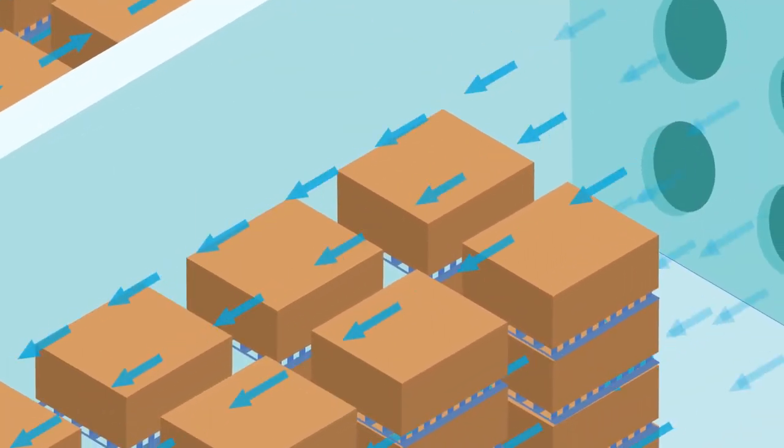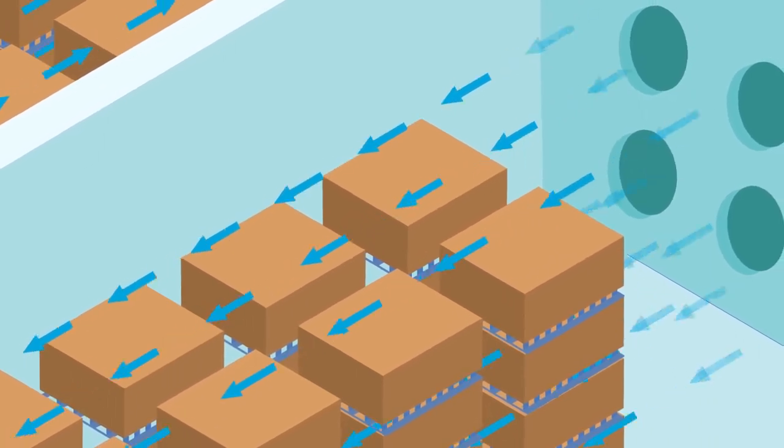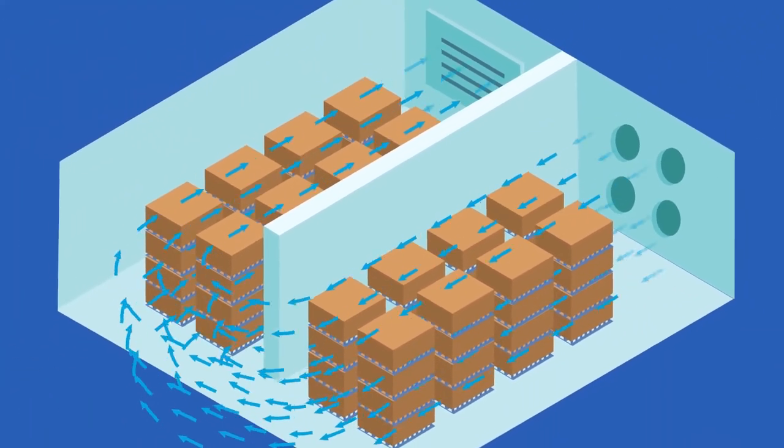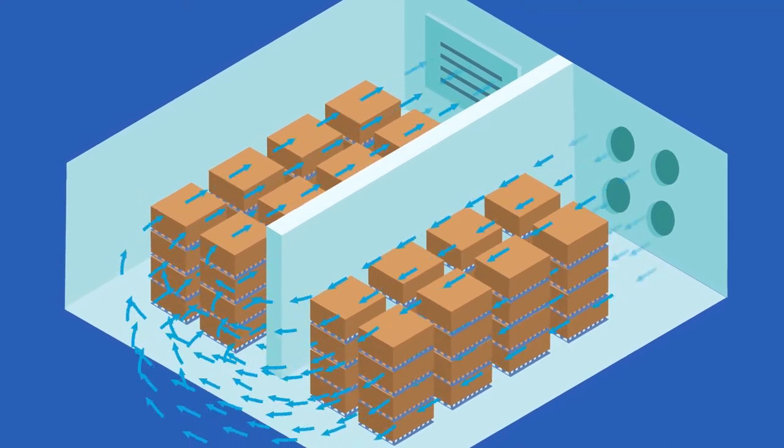Low air resistance further ensures that the airstream is not blocked after the first few pallets but also reaches the pallets at the far end of the blast freezing chamber with the highest possible velocity. This not only shortens the freezing time but also utilizes operational energy far more efficiently.